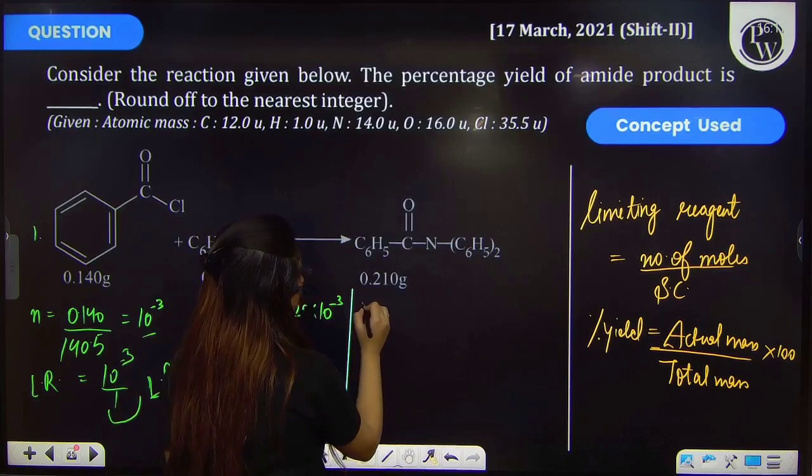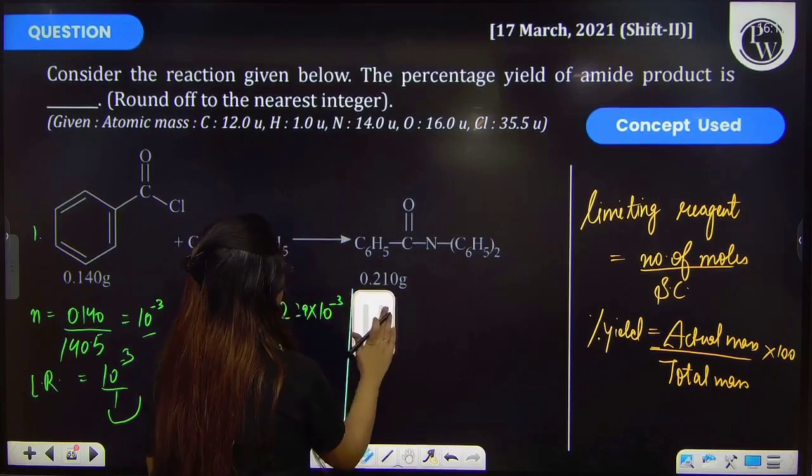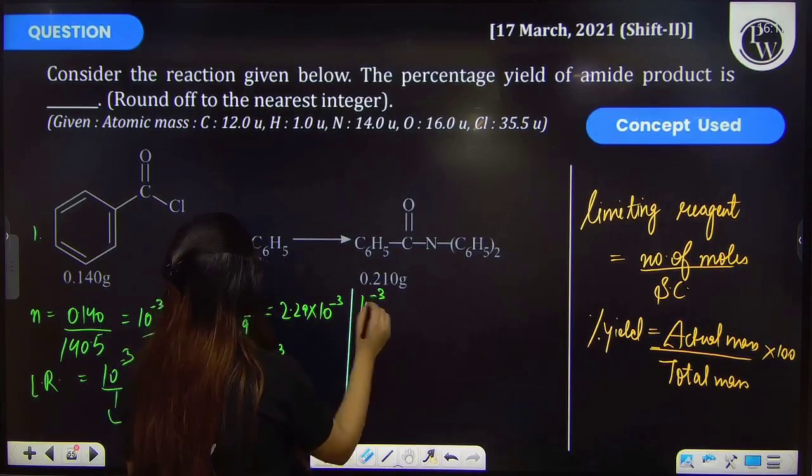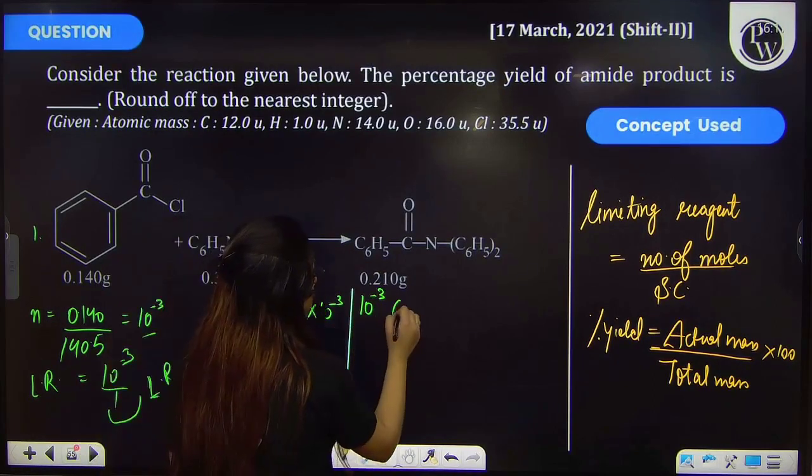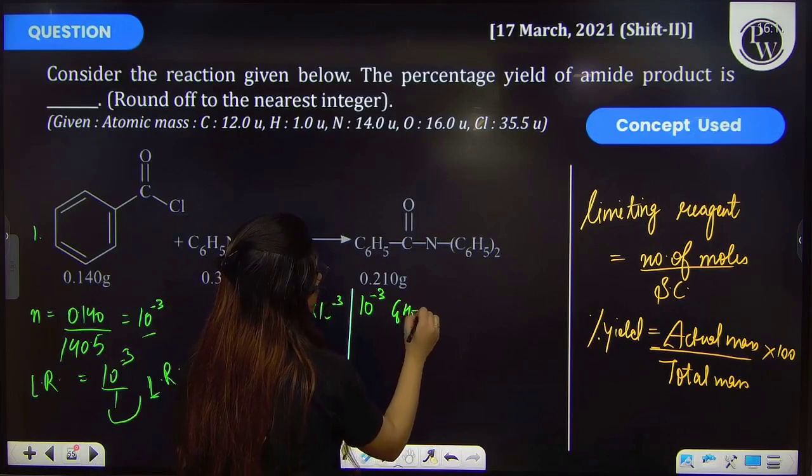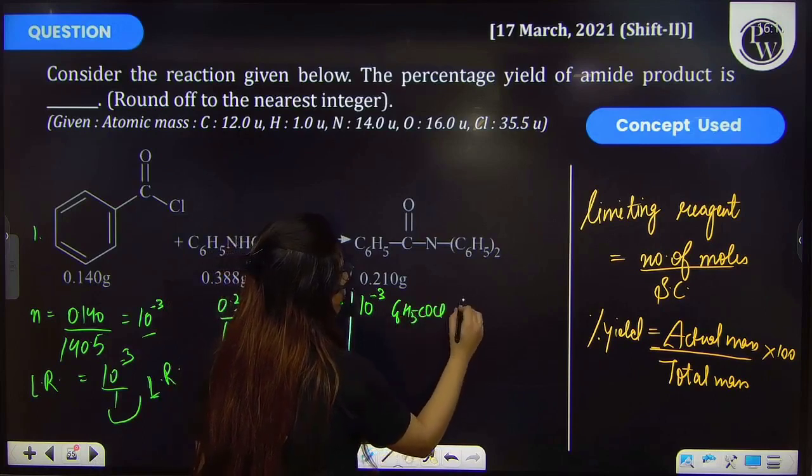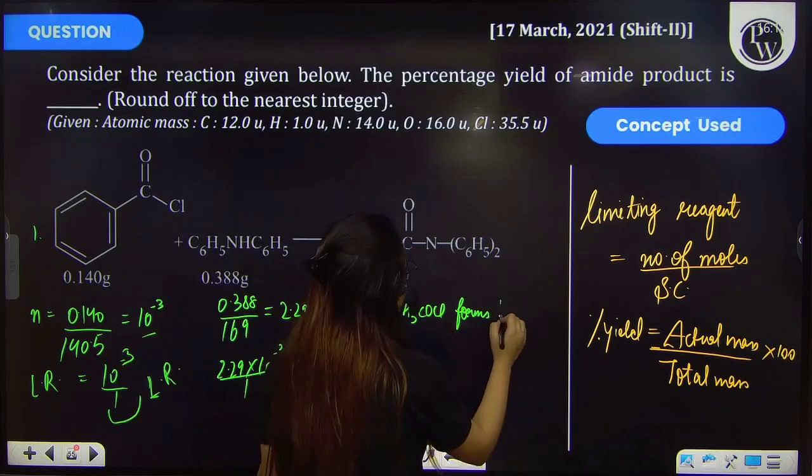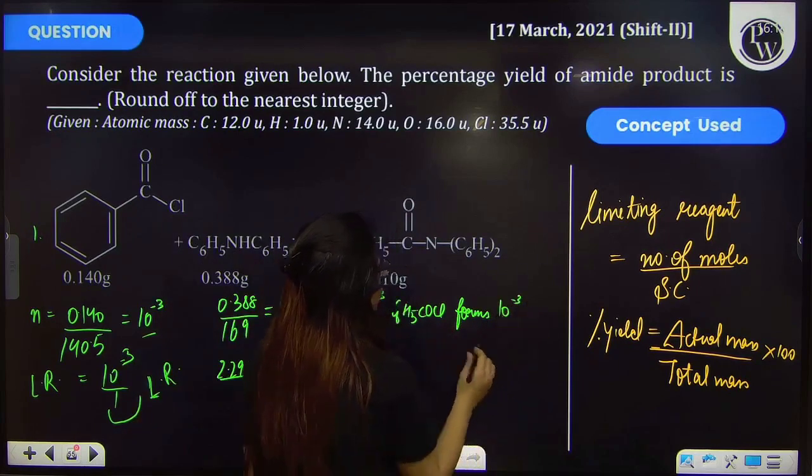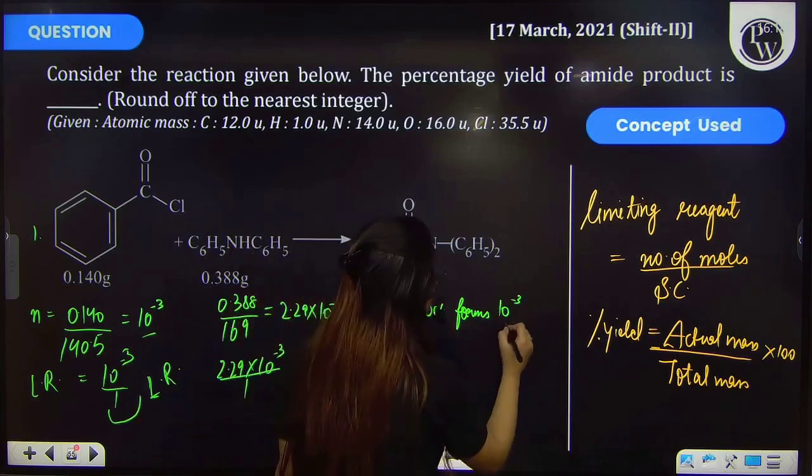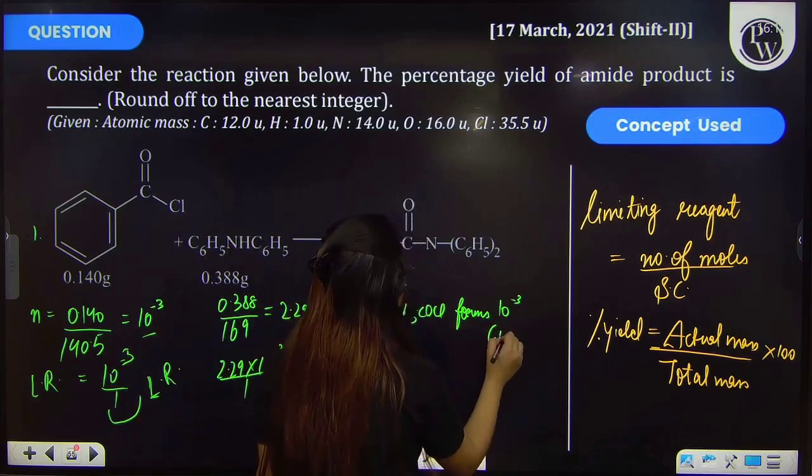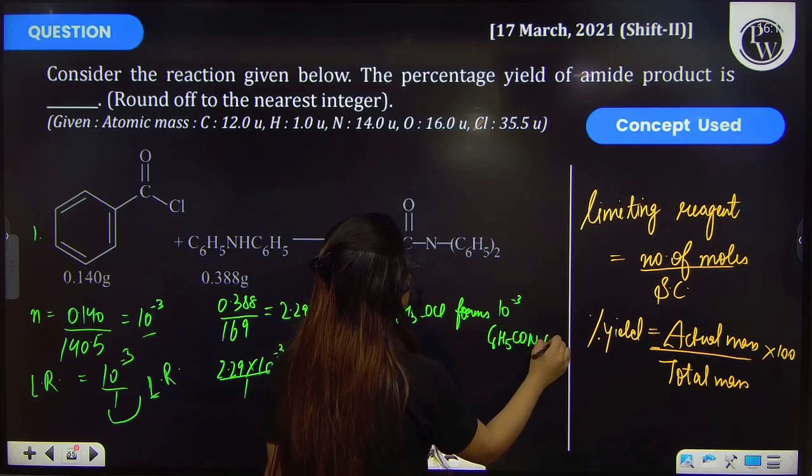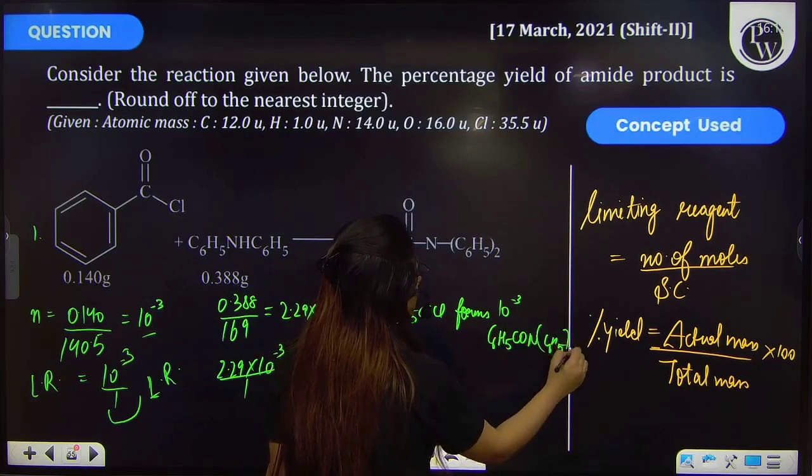That means from 10 × 10^-3 moles of C6H5COCl forms 10 × 10^-3 moles of this product, that is C6H5CO whole twice. Right?